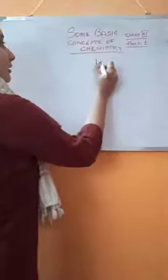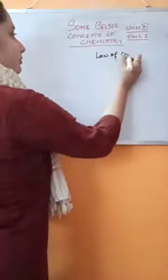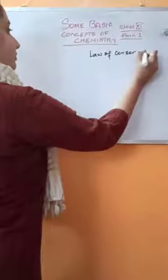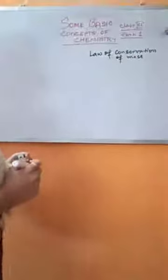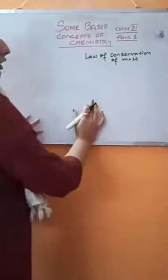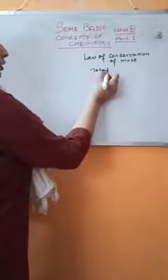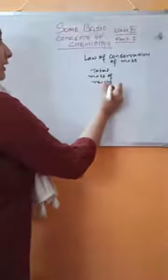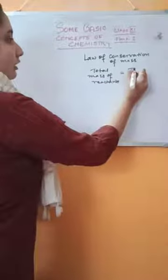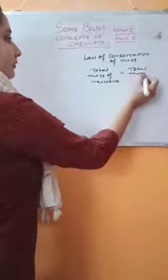Today I will start with an important portion which is the laws of chemical combination. The first law is the law of conservation of mass. This law states that during a physical or a chemical change, the total mass of reactants will be equal to the total mass of products.